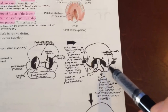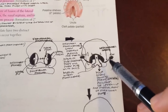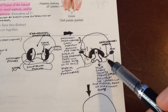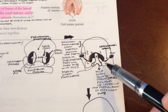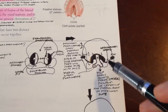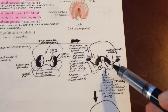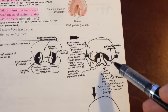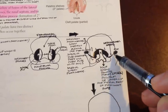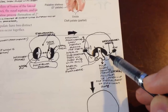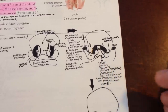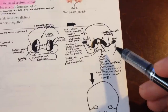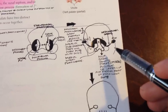We also have the nasolacrimal groove — a furrow that initially separates the maxillary and lateral nasal prominences. You can have cleft palate defects that also involve the nasolacrimal groove. The ectoderm in the floor of this groove forms the nasolacrimal duct, which runs from the medial corner of the eye to the inferior meatus of the nasal cavity. Following formation of the duct, the maxillary and lateral nasal prominences fuse with each other.